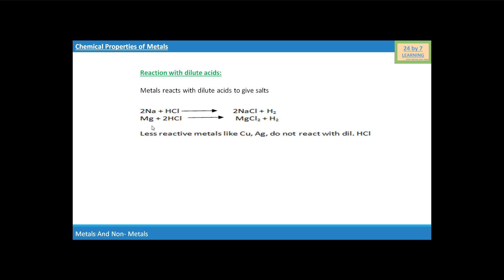Similarly, when magnesium reacts with HCl then it will also form a salt, MgCl₂ i.e. magnesium chloride. Less reactive metals like copper and silver do not react with dilute HCl.